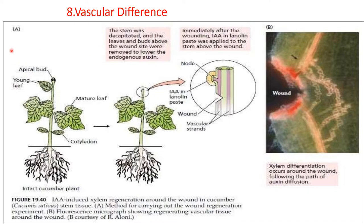Vascular differentiation: auxin induces vascular differentiation in plants. This has been confirmed in tissue culture experiments and from studies of transgenic plants. Cytokinins are also known to participate in differentiation of vascular tissue, and it is believed that vascular differentiation in plants is probably under the control of both auxins and cytokinins.